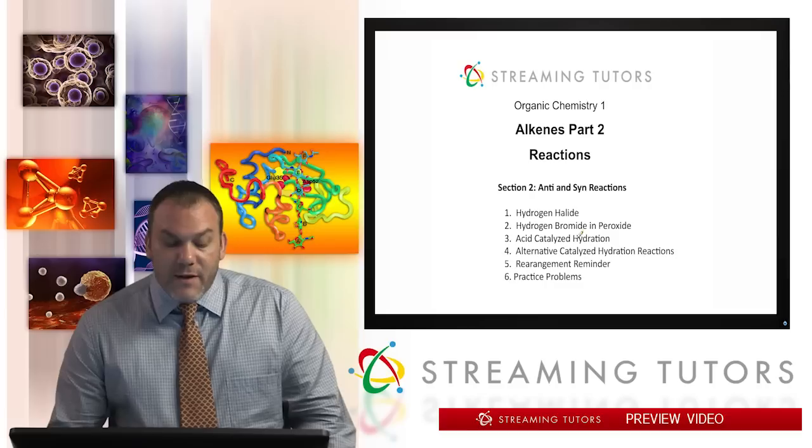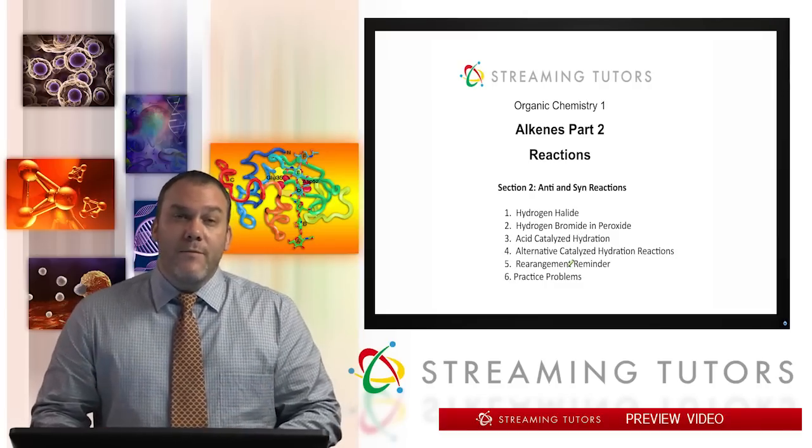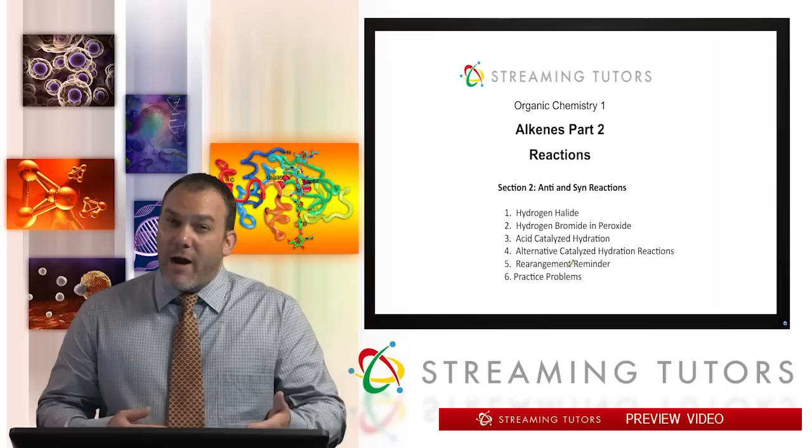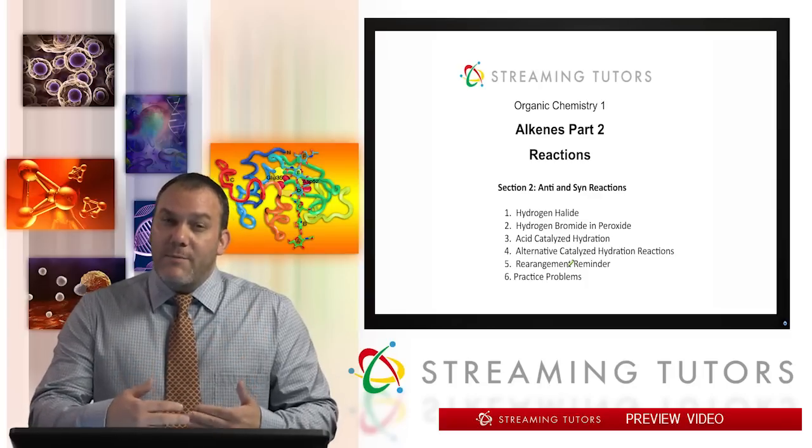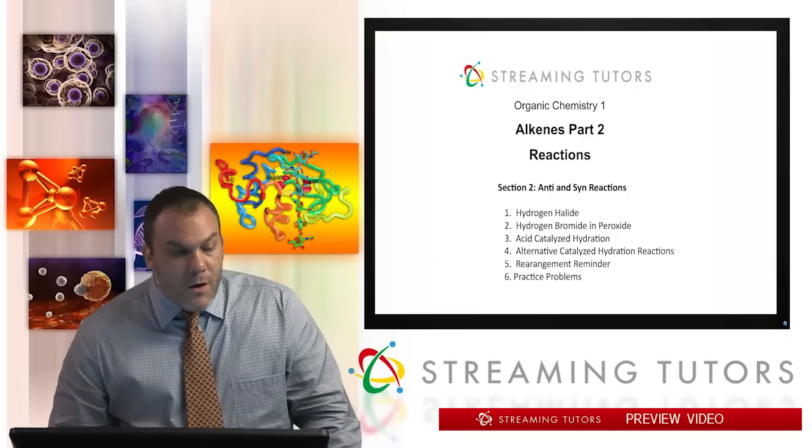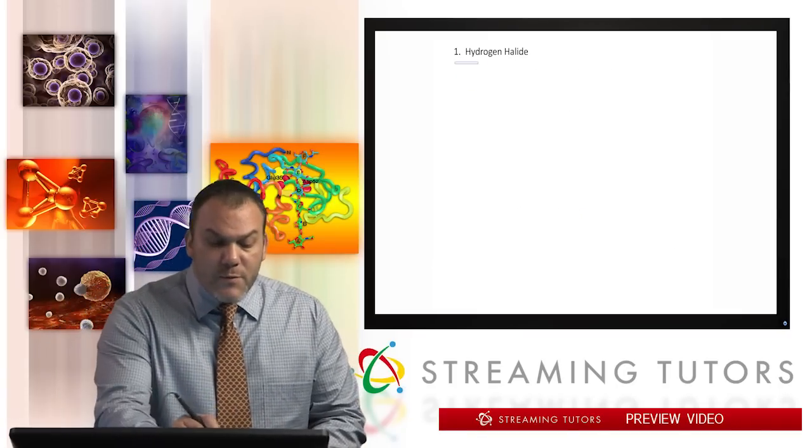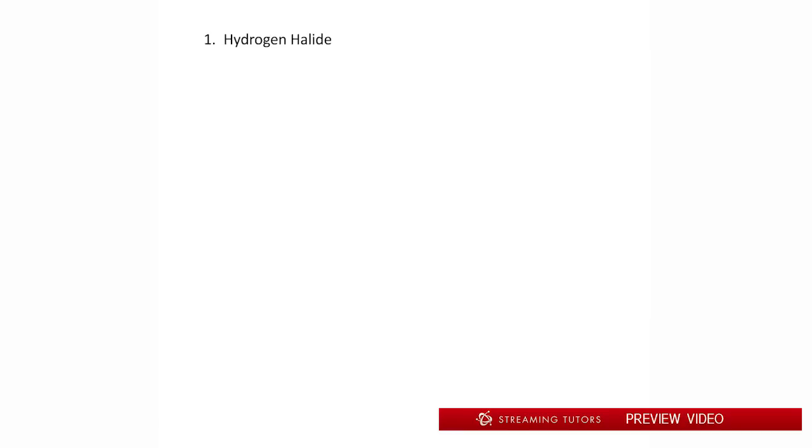Well actually there's four reactions and then just a reminder of rearrangement and then we'll wrap up with problem solving. So this is going to be the trend. We're going to go through the reaction types, we'll do problems, and we'll move on to the next set. That's the basic flow. So let's get started. The first one is the hydrogen halide and this will probably take a little bit more time than the others simply because we're going to go over a lot of theory points from this. So let's first start off by emphasizing what X could be. Now if you remember X equals a halogen.